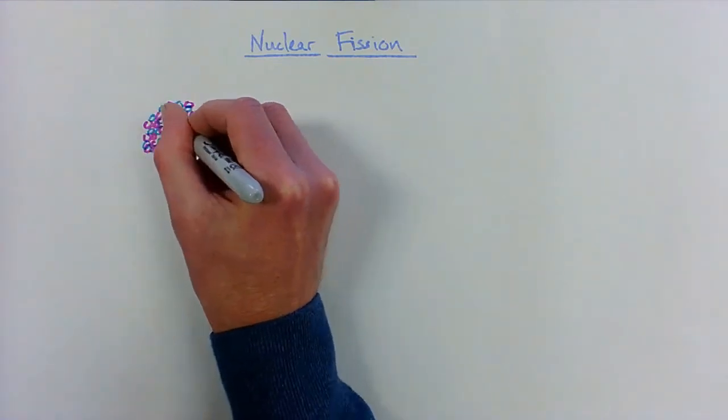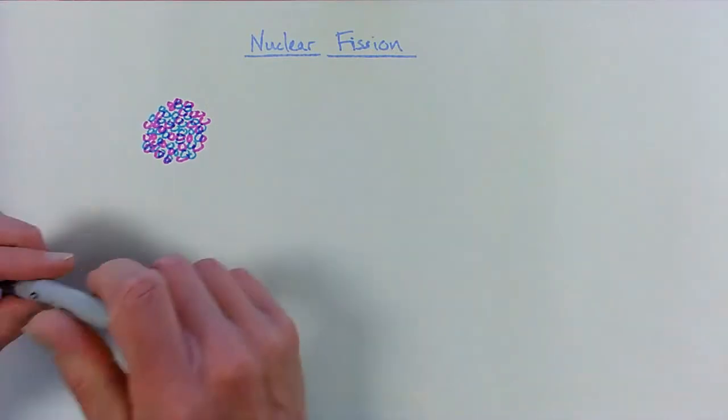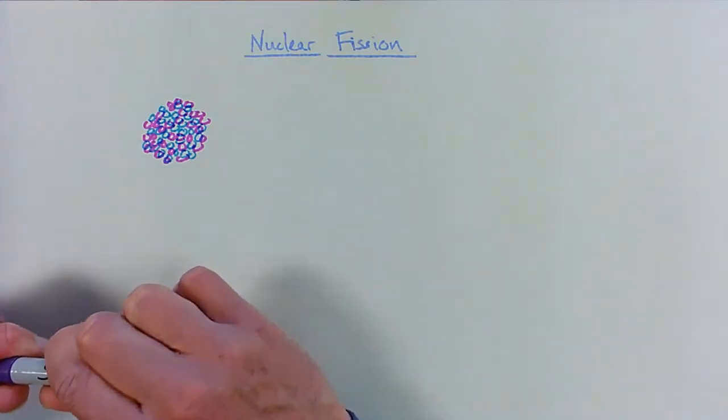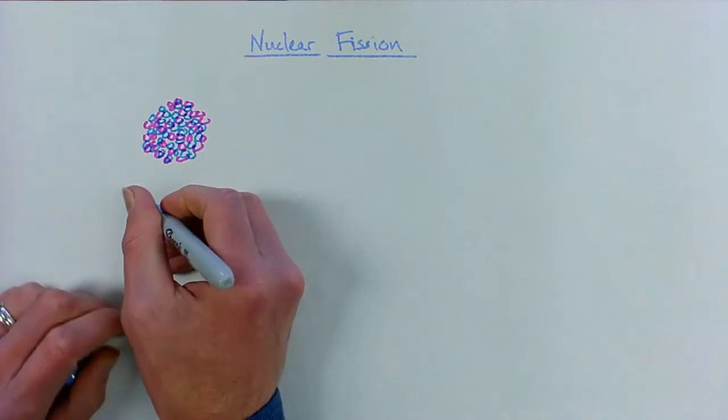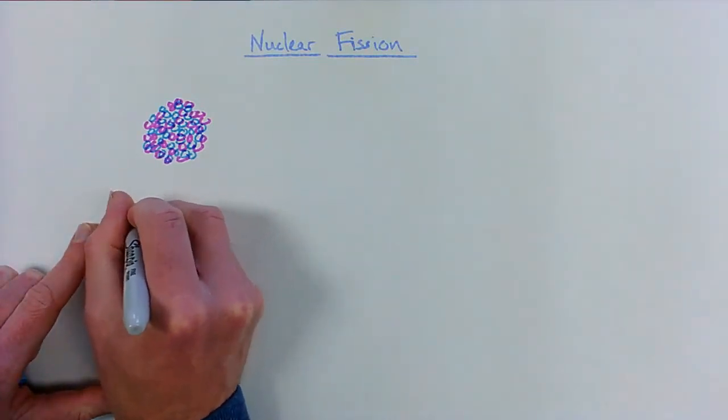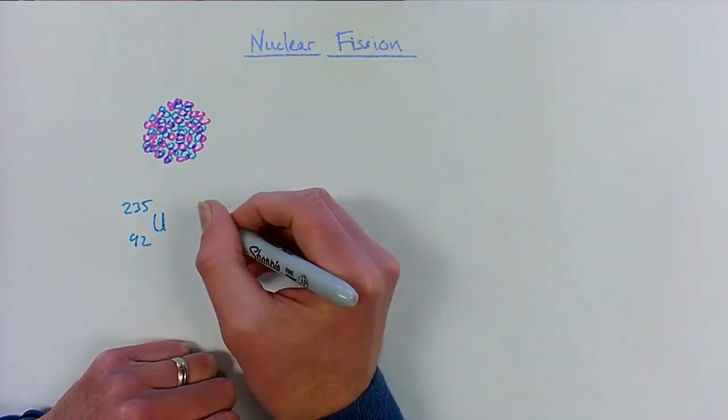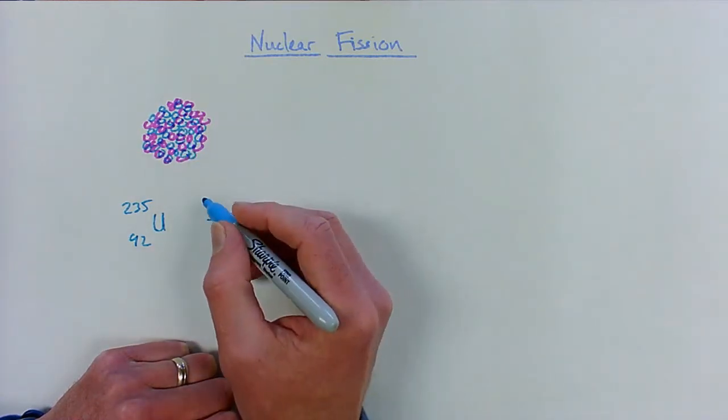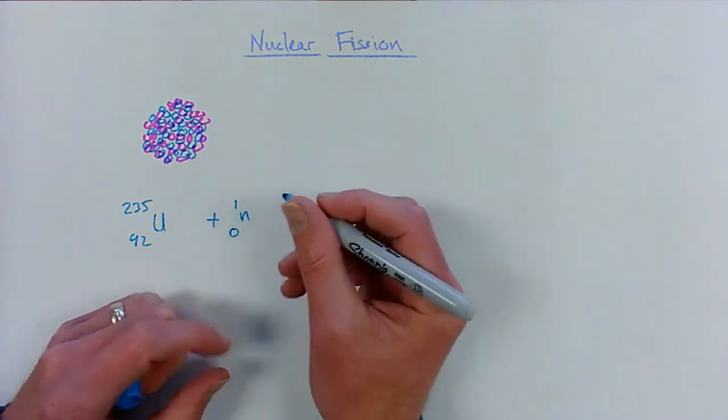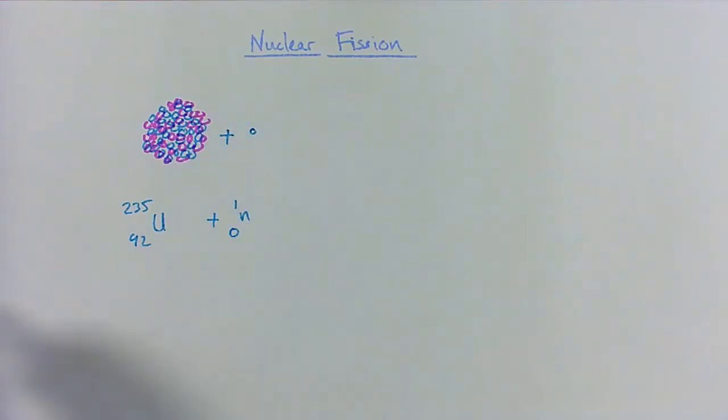Some of these large unstable nuclei will split by themselves and we call that spontaneous fission. Some need to be induced, and with uranium, which is one of the types we'd use in power stations, we need to induce it. To induce it, we have to make the nucleus absorb a neutron. So we can fire a neutron at it, and this causes the uranium nucleus to become even more unstable and then it splits into two smaller nuclei.